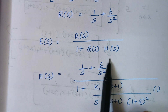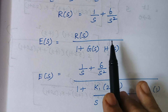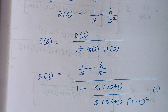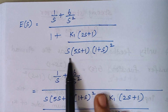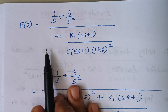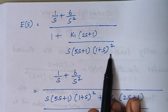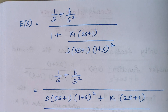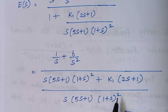Substituting, this is the value of R(s) and this is G(s). Since it is a unity feedback system, H(s) = 1. The next step is to take LCM for the denominator part. When you take LCM, the 1 gets multiplied with those terms, giving this expression.